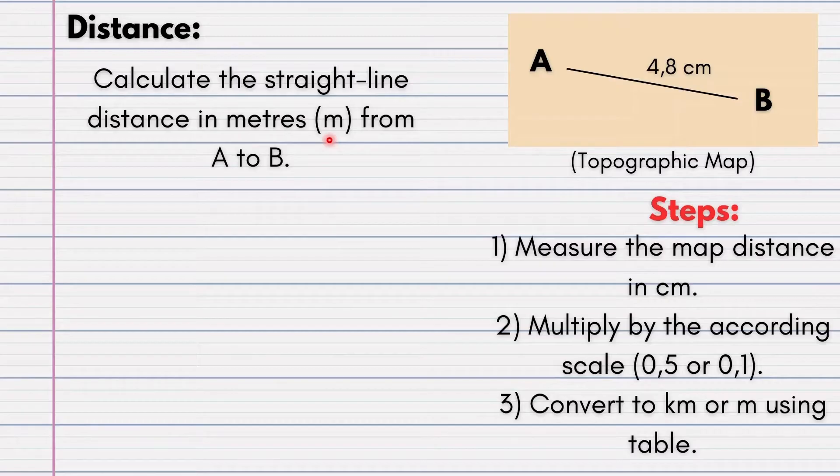So what does that mean? First we identify what type of map it is, and from here we can see it is a topographic map. So we multiply by 500. In the diagram we can see there are two points A and B, and there's a line joining the two.